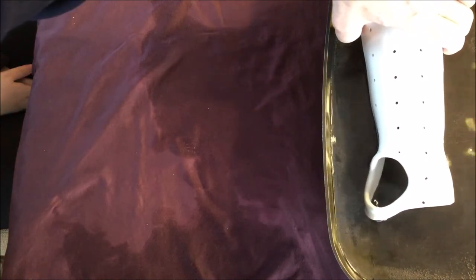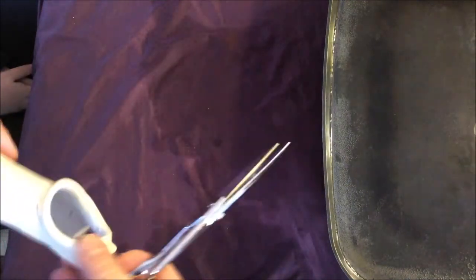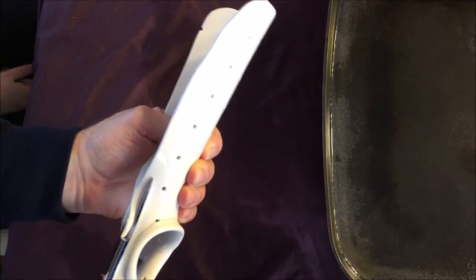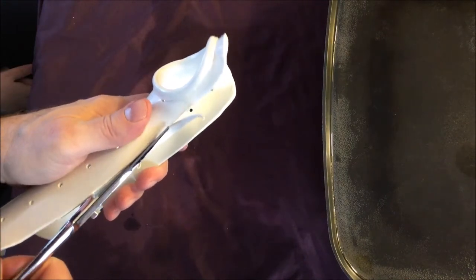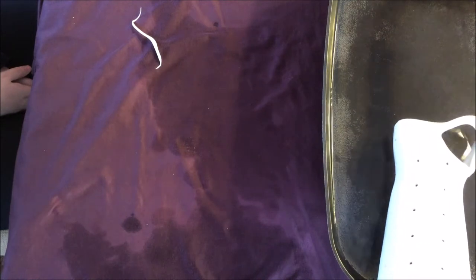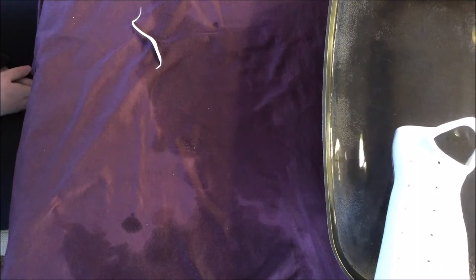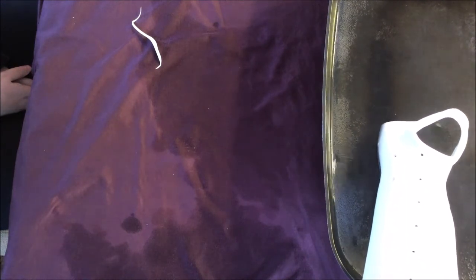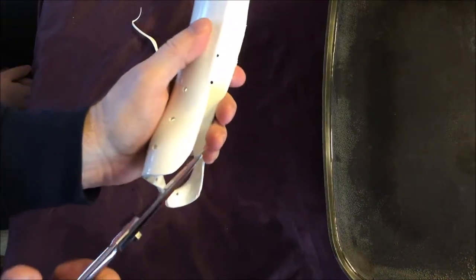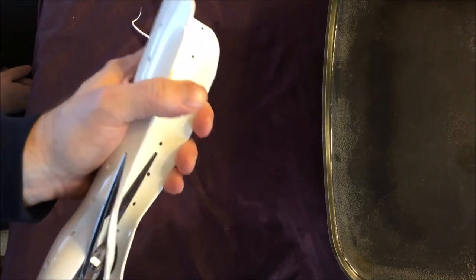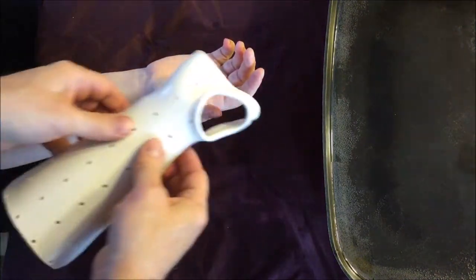To do the trimming, we're going to again just dip it into the water briefly and then go ahead and trim it off. Sometimes it helps to go from one side and then the other and meet in the middle. Now we'll trim off the excess on the ulnar side of the wrist. Here I'm just following the little scoring mark I made with my thumbnail on the thermoplastic.